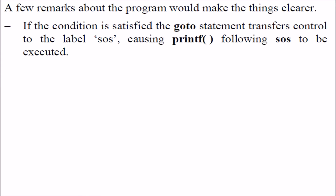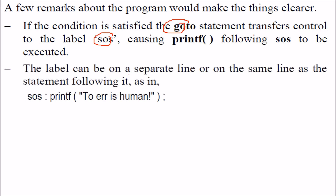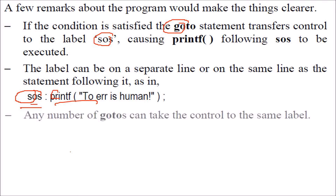If the condition is satisfied, the goto statement transfers control to the SOS label, which will then be printed. A label can be on a separate line or on the same line as the statement. You can have multiple goto statements in your program.